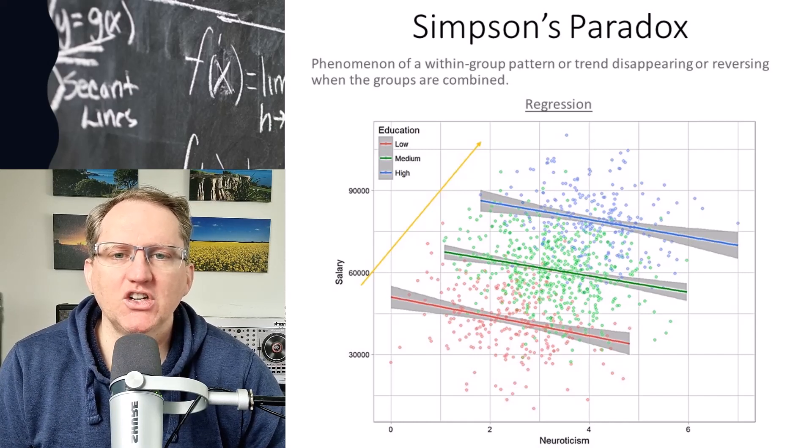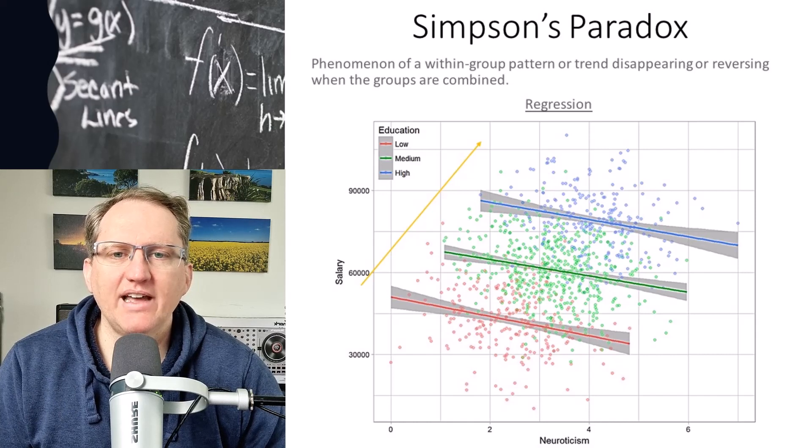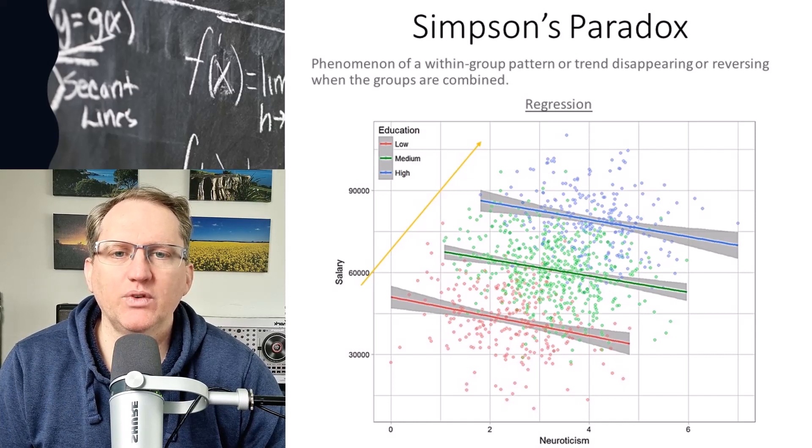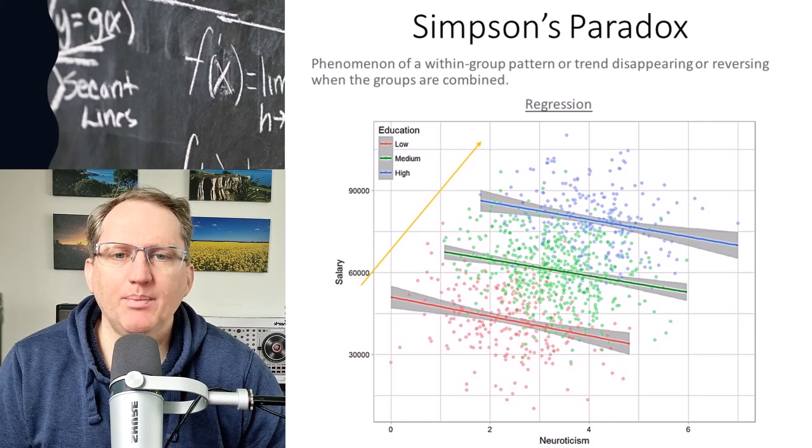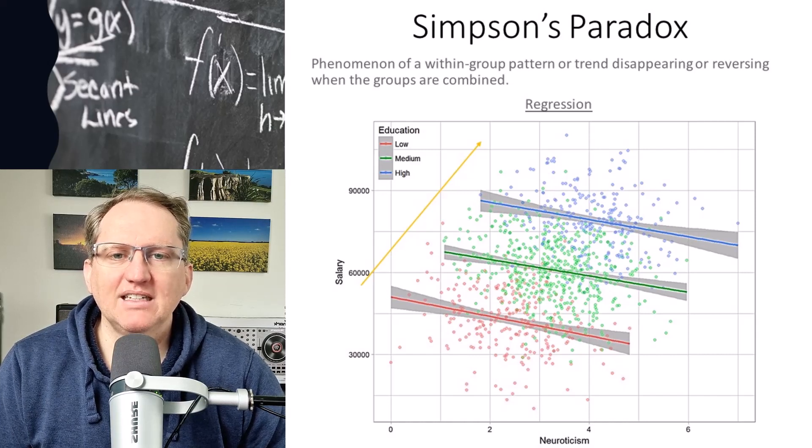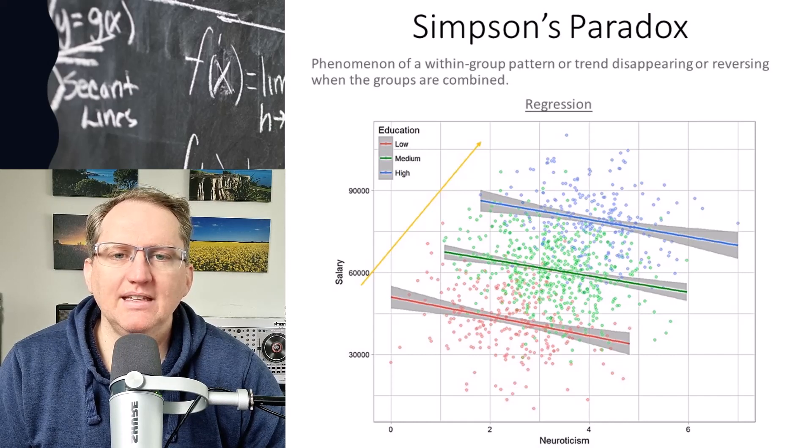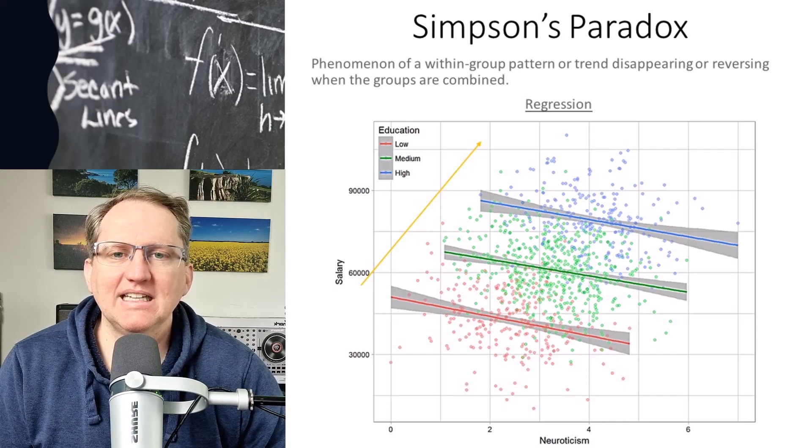In the first one we have a regression and we can see if we just look at the data overall it looks like there is a positive trend. If we fit a line, we've got the yellow one in there, it is going up and to the right. But in fact, that is ignoring a very important covariate for these variables which is education level.